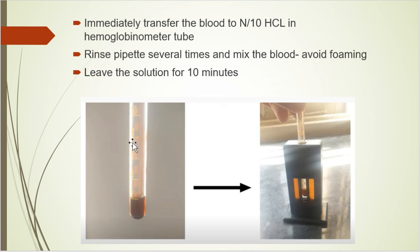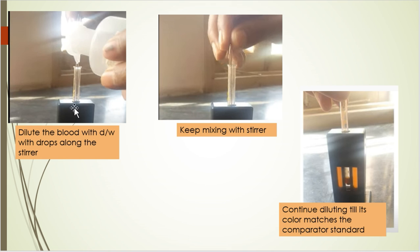Rinse the pipette several times and mix the blood, avoiding foam formation. Be sure to rinse the pipette completely, because otherwise even a small concentration change can affect the estimation and give a wrong value. Then leave the solution for 10 minutes, because these 10 minutes are necessary to form the acid hematin component.